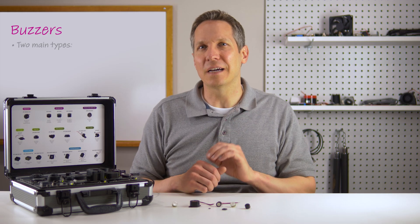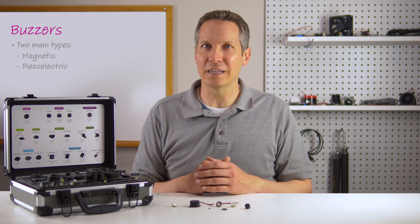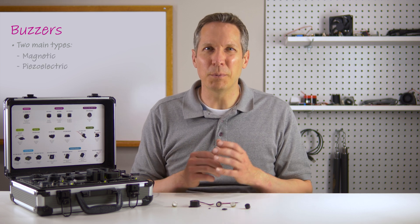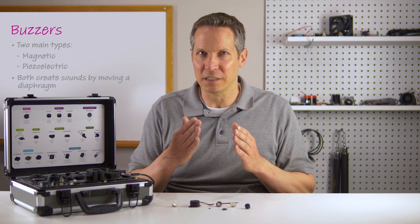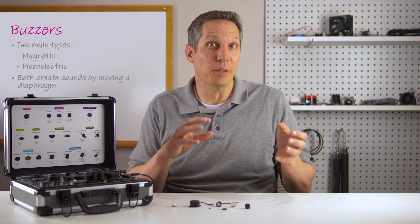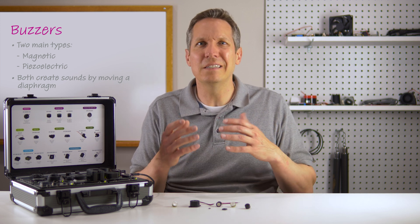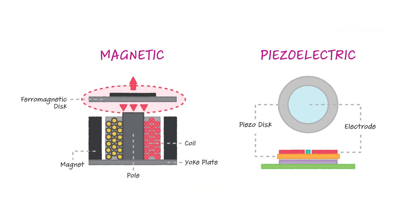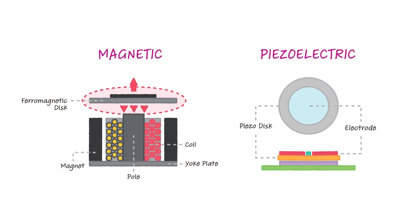There are two main types of buzzers available: magnetic and piezoelectric. They both create sounds the same way — by moving a diaphragm back and forth to move the air and make sound — though the mechanism is very different. Magnetic buzzers use an electromagnet to move a diaphragm back and forth, while piezoelectric buzzers use a vibrating piezoelectric crystal.